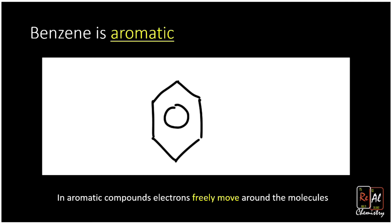To represent those freely roaming electrons, we can draw a cyclohexane and then just put a circle inside it — that ring represents the free electrons that can roam all around the molecule. Strictly speaking, they're not totally free; they're still bound to the molecule, but they can roam all the way around it in a full circle.